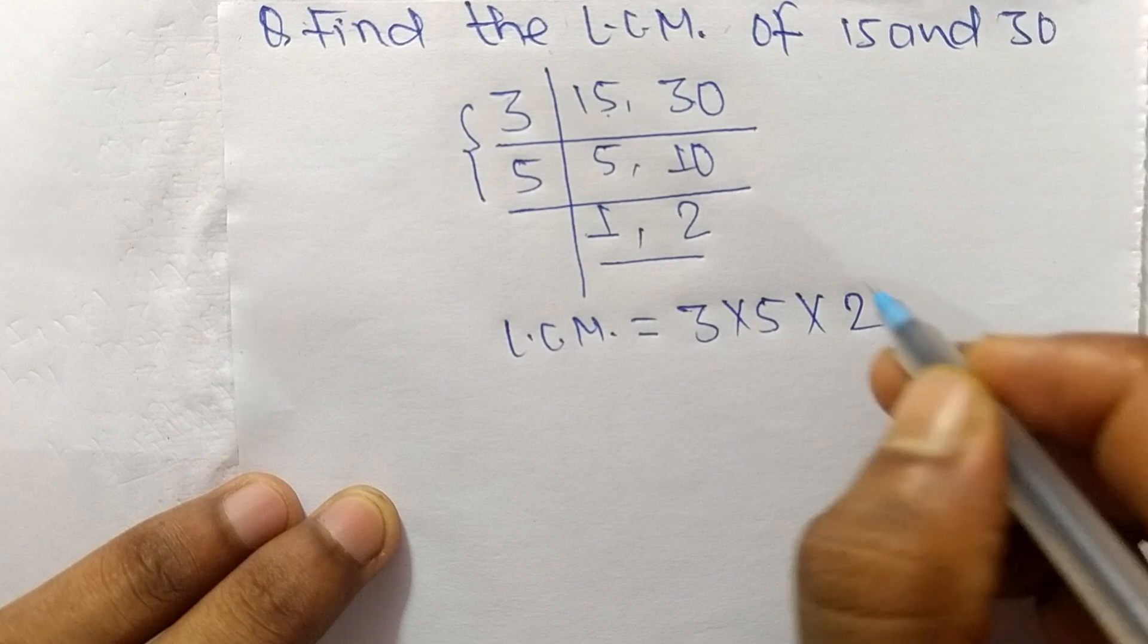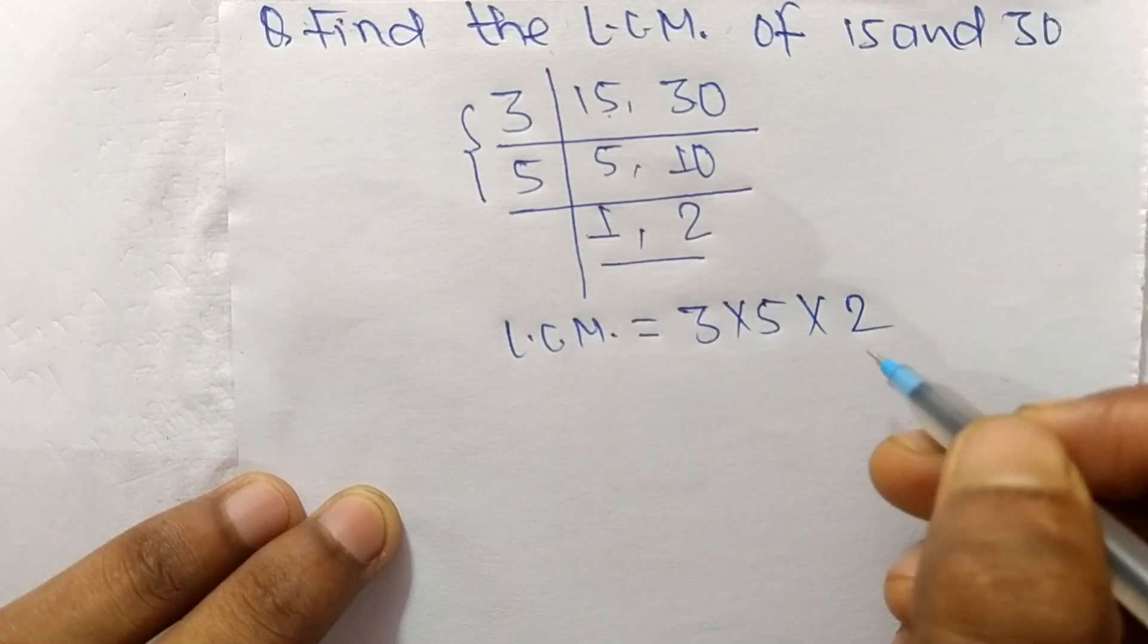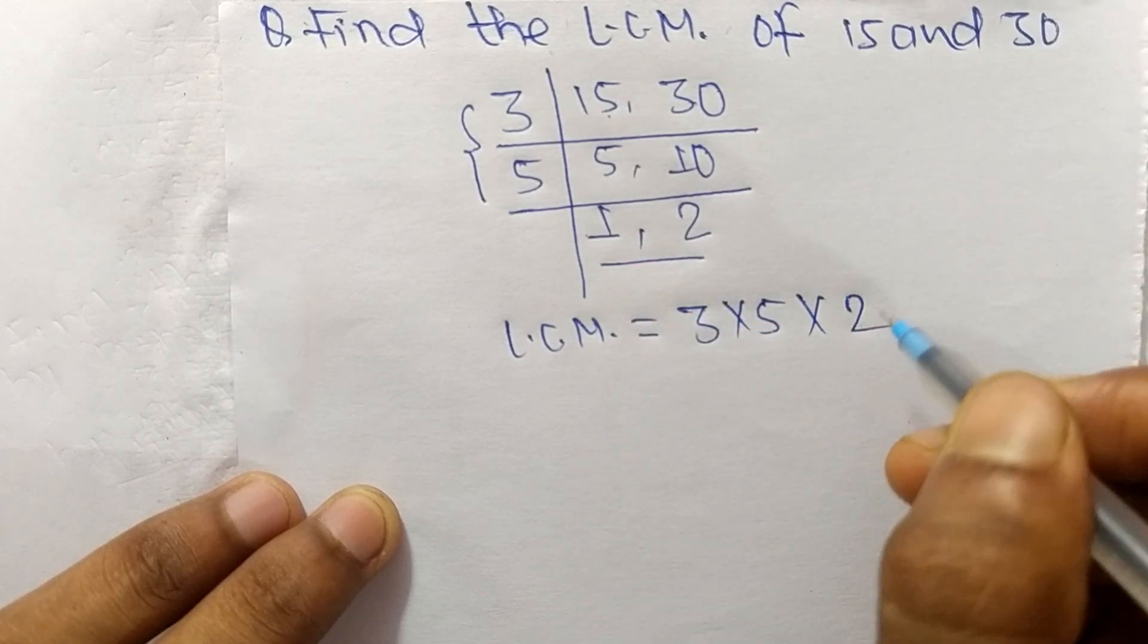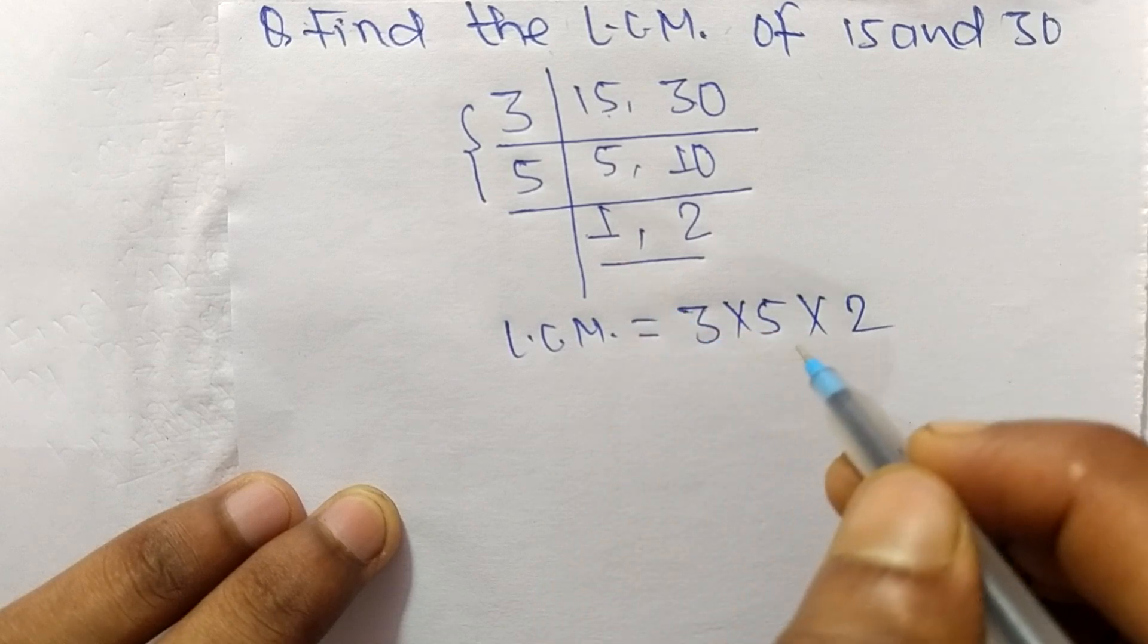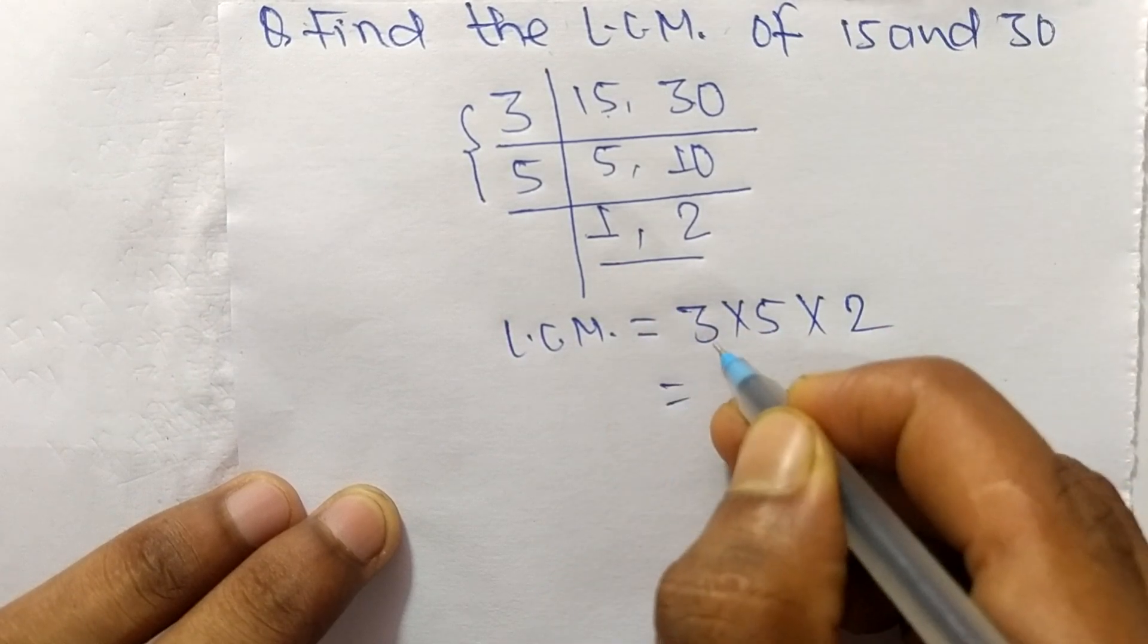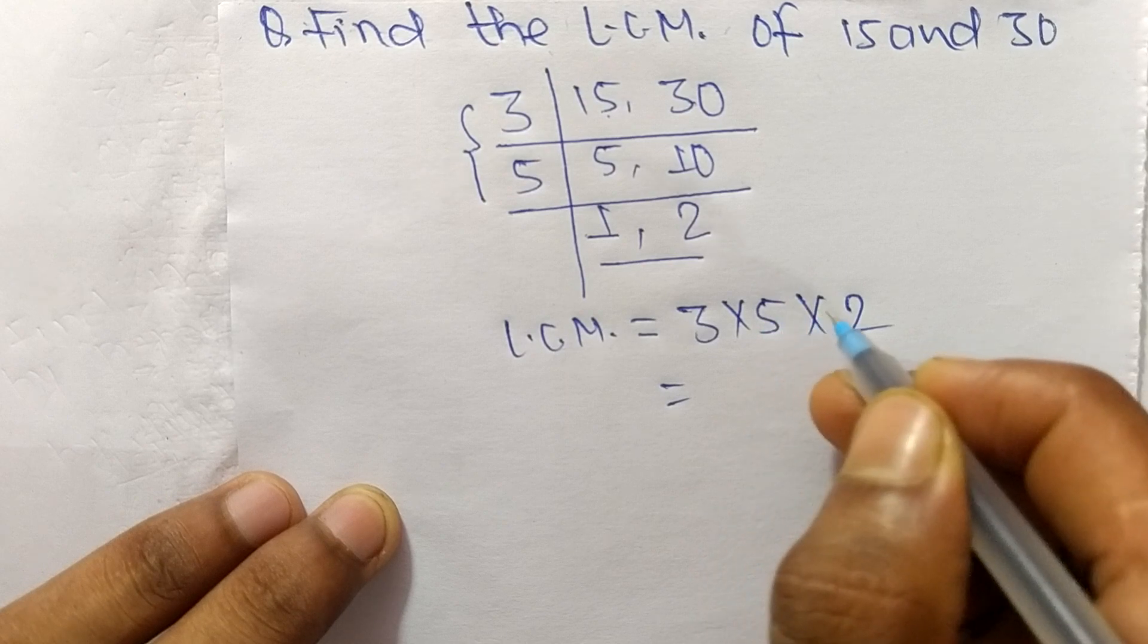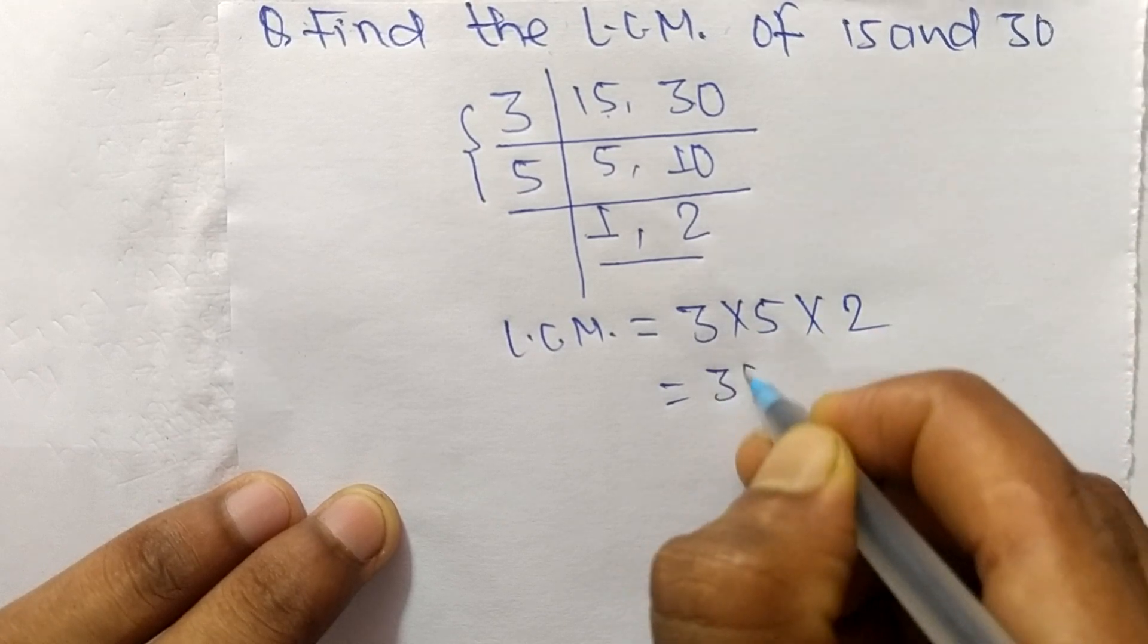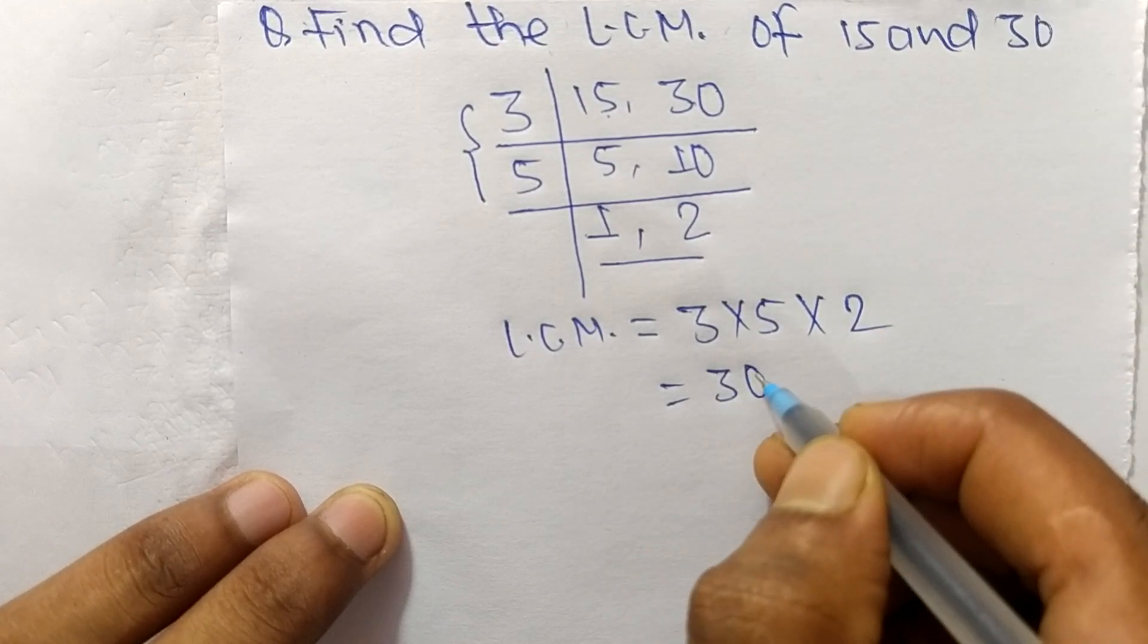We don't take 1 because multiplying any number by 1 gives the same result. So 3 times 5 means 15, and 15 times 2 means 30. Therefore, 30 is the LCM of 15 and 30.